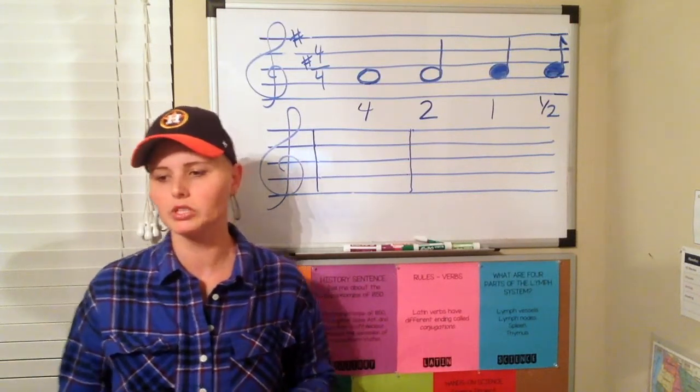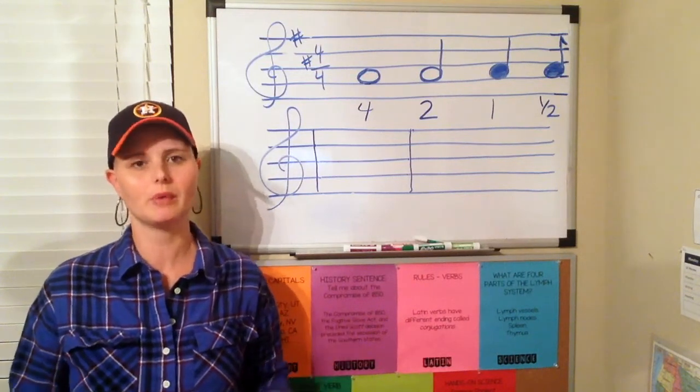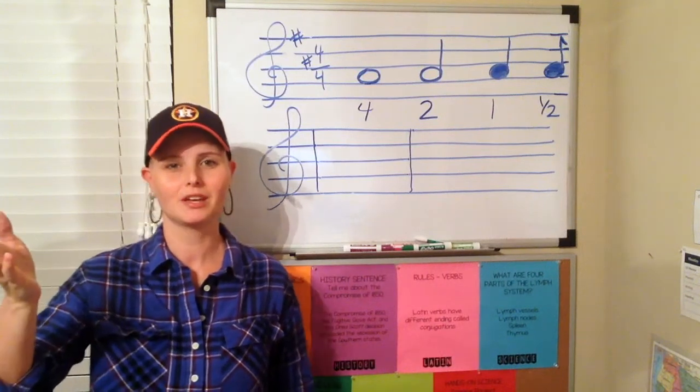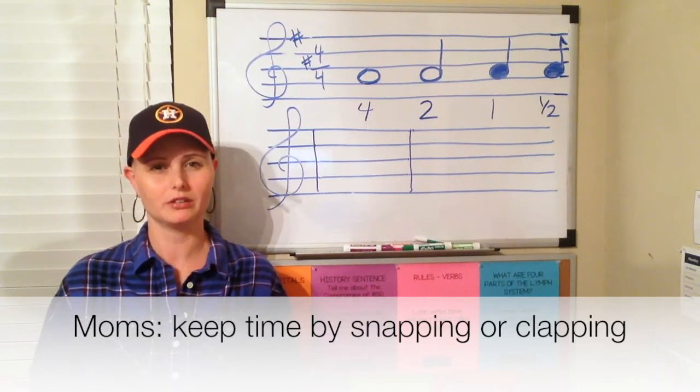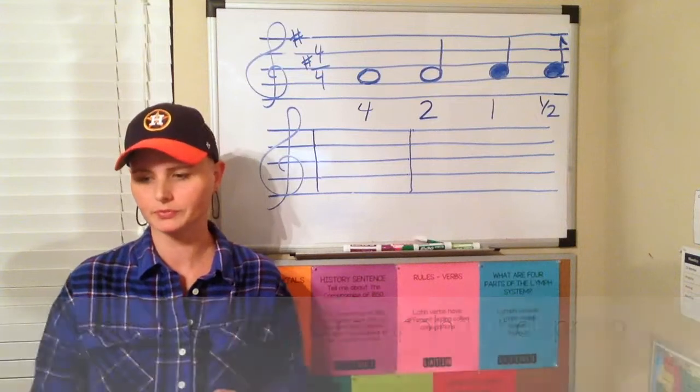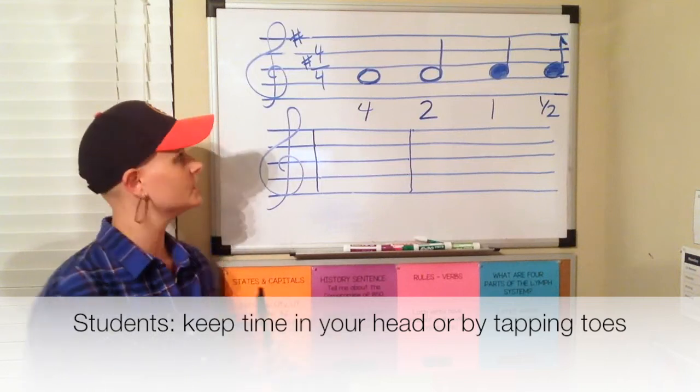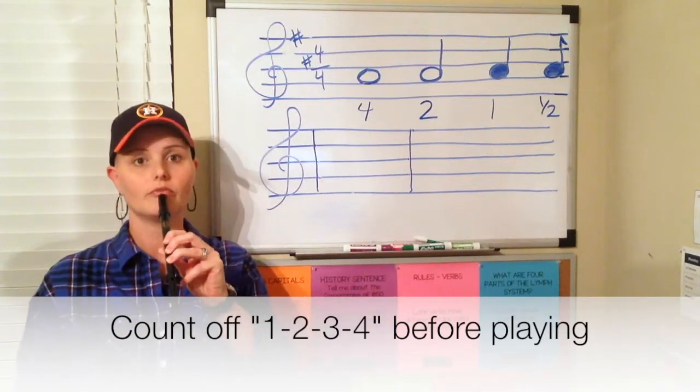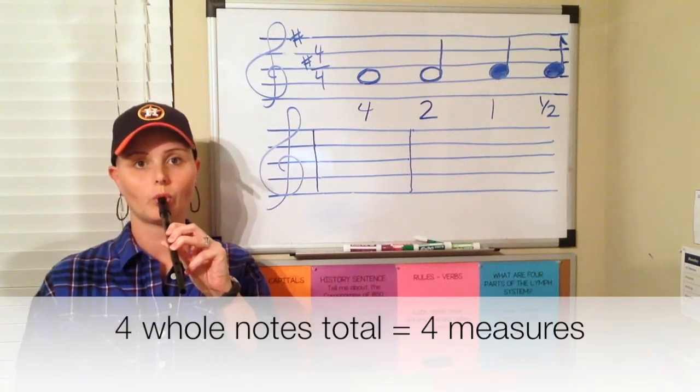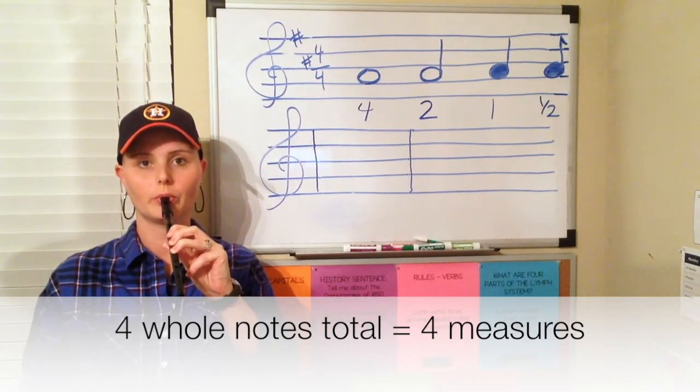It gives us a guideline for how long to play each note. A quarter note is four individual beats. Let me just show you what I'm talking about. I'm going to have Chris, who's off camera, keep time with our little clock metronome here. And I'm going to play a couple of different notes for you. Are you able to do that for me? So this is a G and I'm going to play a G for a whole note. It's four beats total. Two, three, four.